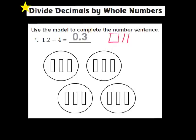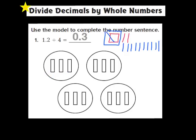So what I'm going to need to do is regroup the whole 1 as 10 tenths. I'm going to regroup that whole into 10 tenths: 1, 2, 3, 4, 5, 6, 7, 8, 9, 10. Now that I've regrouped my 1 whole into 10 tenths, I'm going to share equally my tenths among the 4 different groups. I have 10 tenths here plus the 2 tenths here, so that means I have a total of 12 tenths to share equally among the 4 groups.